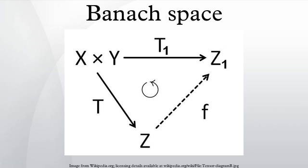Lindenstrauss and Tzafriri proved that a Banach space in which every closed linear subspace is complemented is isomorphic to a Hilbert space. The proof rests upon Dvoretzky's theorem about Euclidean sections of high-dimensional centrally symmetric convex bodies. Dvoretzky's theorem states that for every integer n, any finite-dimensional normed space with dimension sufficiently large compared to n contains subspaces nearly isometric to the n-dimensional Euclidean space.